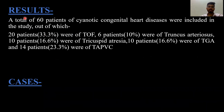Results. A total of 60 patients of cyanotic congenital heart disease were included in the study, out of which 20 patients were of TOF, 6 patients were of truncus arteriosus, 10 patients were of tricuspid atresia, 10 patients were of TGA, and 14 patients were of TAPVC.